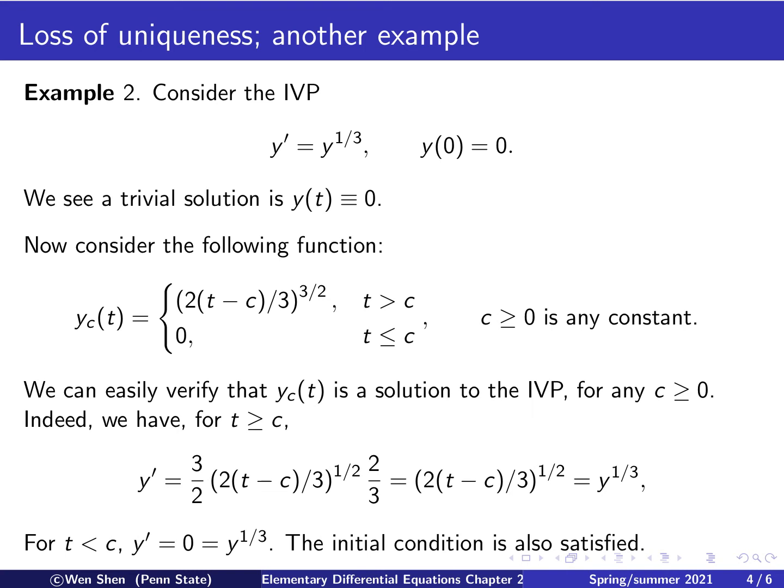So what have we discovered? Basically, we can now conclude that for this initial value problem, there exists infinitely many solutions taking this form, where for any c constant bigger than 0, this is a solution.